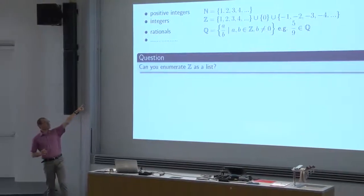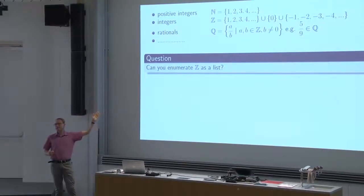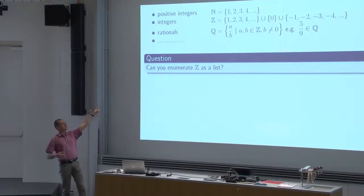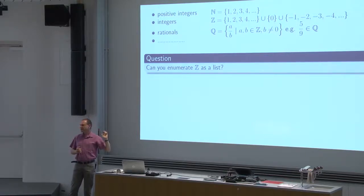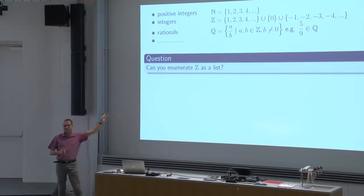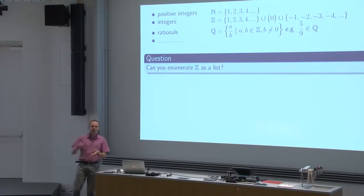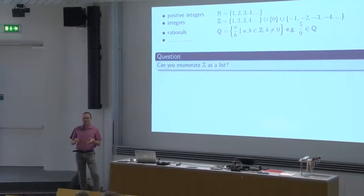The way we have written the integers is not a single infinite list. If you put 1 the first day in the box, the second day 2, the third day 3, the fourth day 4, then minus two will never show up in the box. So we have not enumerated the integers as a list. Is it possible to create such a procedure? Yes or no?